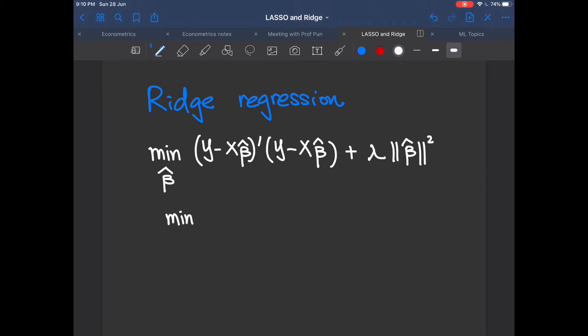Similarly, we can say that this objective function of ridge regression is the Lagrangian of the following constraint optimization problem, which is minimize y minus x beta hat transpose multiply y minus x beta hat. We minimize this expression with respect to beta hat subject to a constraint on beta hat transpose beta hat, which is smaller or equals to t.